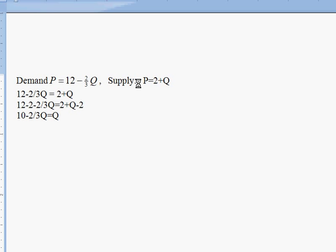Now to get the Qs all on one side, you might want to add 2/3 Q to both sides. So plus 2/3 Q on the left, and plus 2/3 Q on the right. And we're going to end up with 10 equals 1 Q plus 2/3 Q is 1 and 2/3 Q. Or we can rewrite that as 5/3 Q. So 10 equals 5/3 times Q.